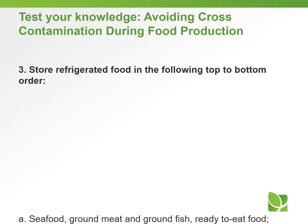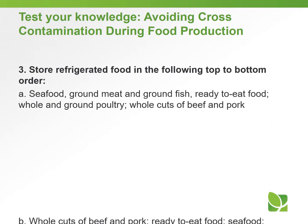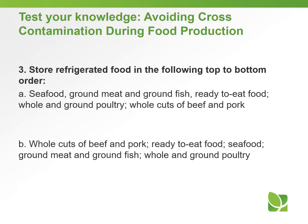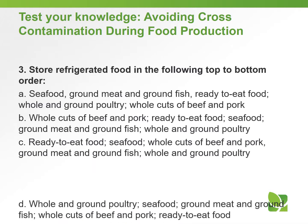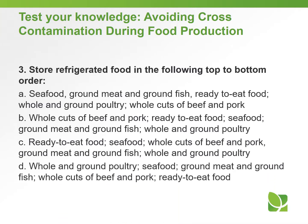Question number three: Store refrigerated food in the following top-to-bottom order. Option A: seafood, ground meat and ground fish, ready-to-eat food, whole and ground poultry, whole cuts of beef and pork. Option B: whole cuts of beef and pork, ready-to-eat food, seafood, ground meat and ground fish, whole and ground poultry. Option D: whole and ground poultry, seafood, ground meat and ground fish, whole cuts of beef and pork, and ready-to-eat food.